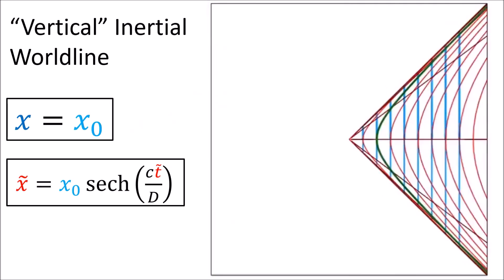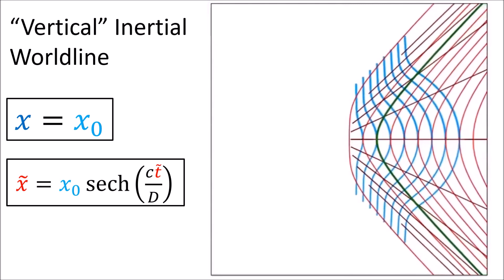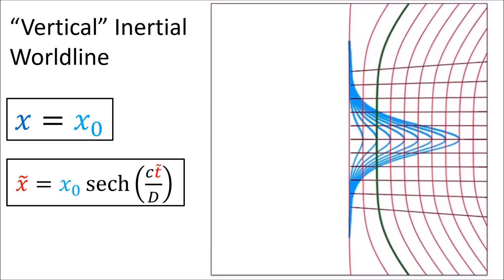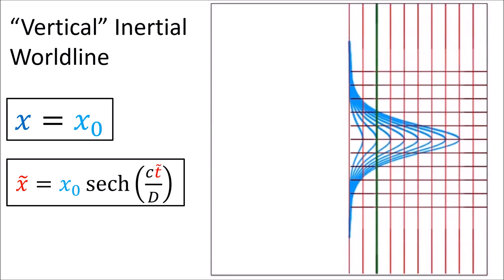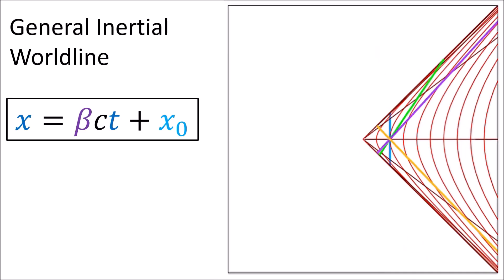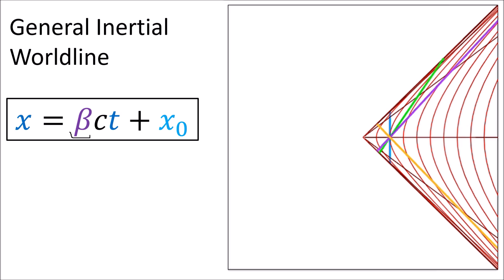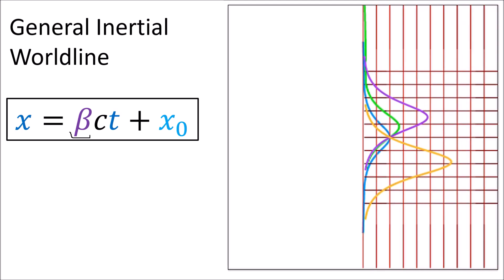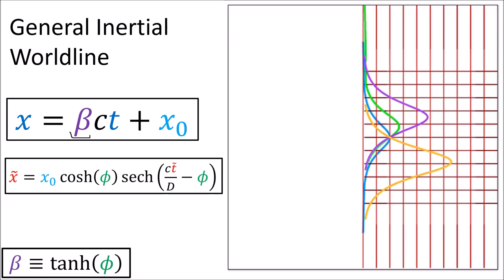This shows that inertial world lines do not always look like straight lines in all coordinate systems. In non-inertial coordinate systems, inertial world lines can look like curves. Also, in inertial coordinates, if an inertial world line is not completely vertical and has a slope given by beta, its equation in Rindler coordinates is still given by a hyperbolic secant curve, but it is rescaled and shifted depending on the slope beta.